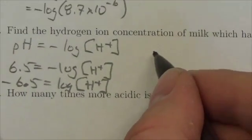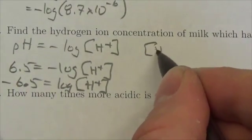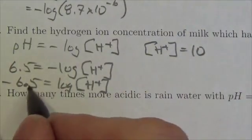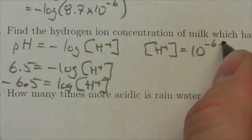The base is 10, so the hydrogen ion concentration will be equal to the base to the power. Remember a logarithm is an exponent, so that's the exponent: negative 6.5.